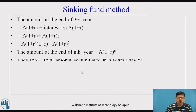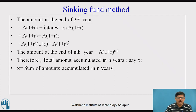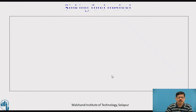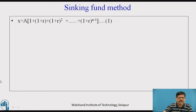So the total amount accumulated in N years — let us call this X — will be equal to the sum of amounts accumulated over N years. That is: X = A + A(1+R) + A(1+R)² + … + A(1+R)^(n−1). Taking A common, we get X = A · [1 + (1+R) + (1+R)² + … + (1+R)^(n−1)]. Let us call this equation number 1.